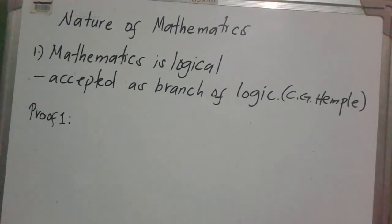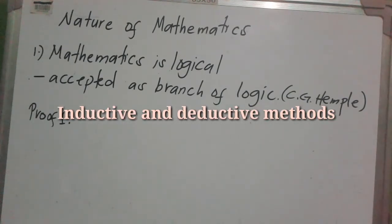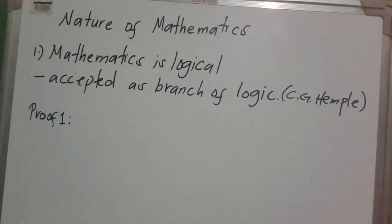The first nature of mathematics is mathematics is logical. It is accepted as a branch of logic — that's according to CJ Humbug. All concepts of arithmetic, algebra, and analysis can be defined in terms of the concepts of logic. There are two methods of logic: the inductive and deductive method. These are the basic processes of mathematics.